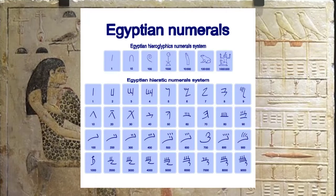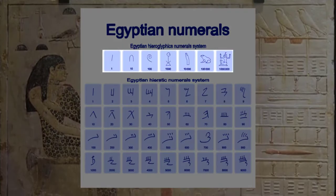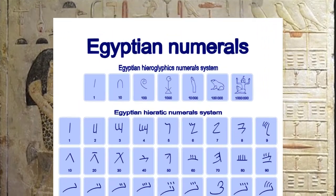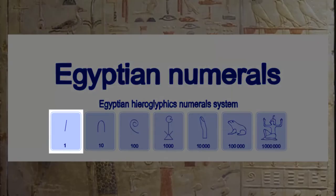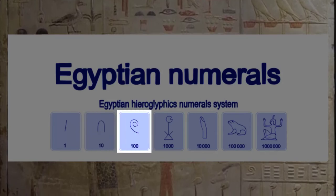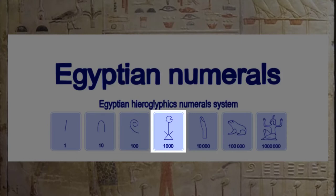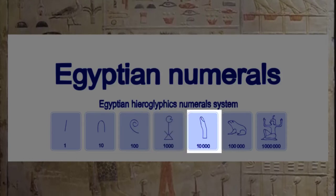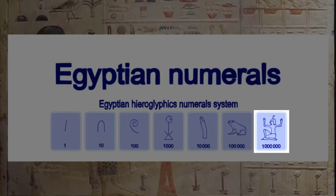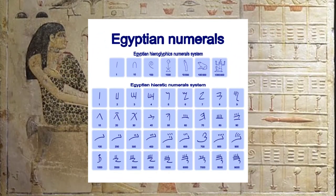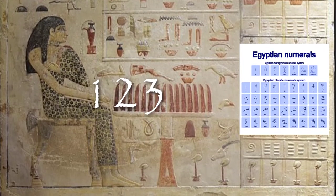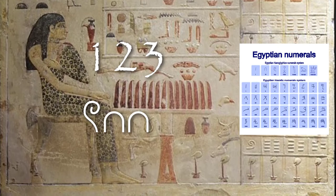The Egyptians also had hieroglyphics for numbers. Their number system was based on a scale of 10, like ours. They used a single line for one, a heel bone for 10, a coil of rope for 100, a water lily for 1,000, a bent finger for 10,000, a frog or tadpole for 100,000, and the god He for one million. The symbols were written together to make up more complex numbers — for example, 123 would have a coil of rope, two heel bones, and three lines.